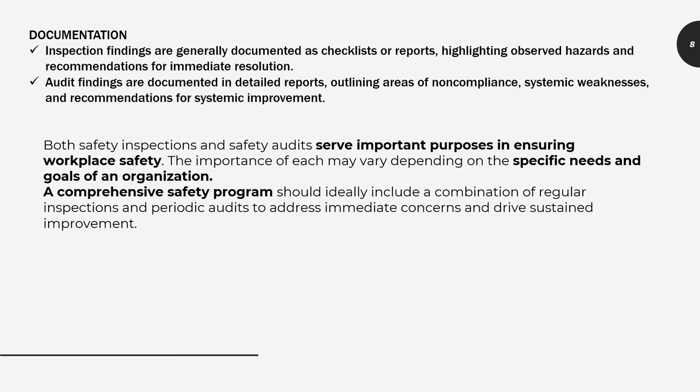Both inspection and audit findings are documented. Inspection findings are generally documented as a checklist or report highlighting observed hazards and recommendations for immediate resolution, while audit findings are documented in detailed reports outlining areas of non-compliance, systematic weaknesses, and recommendations for systematic improvement.